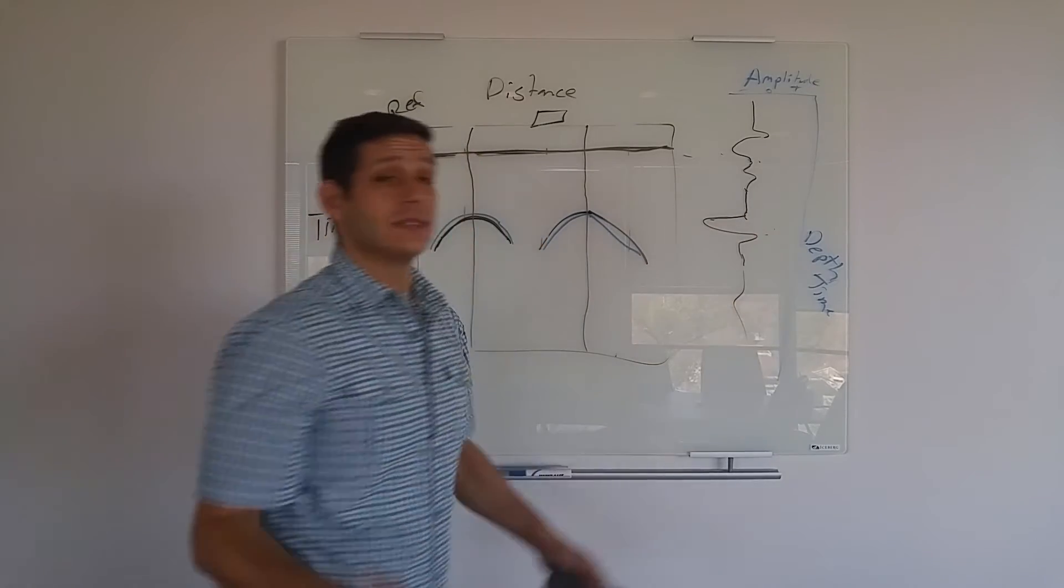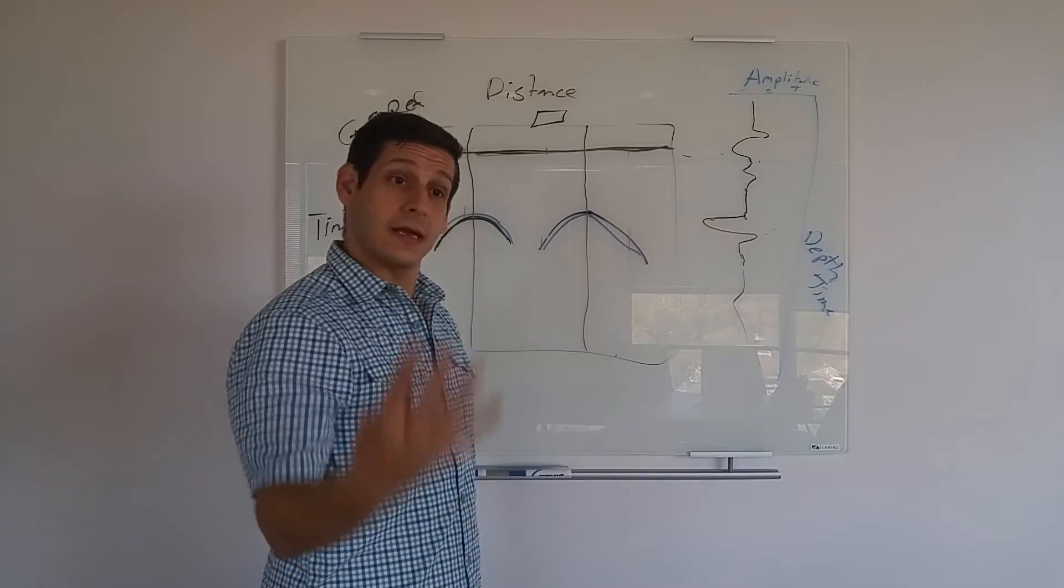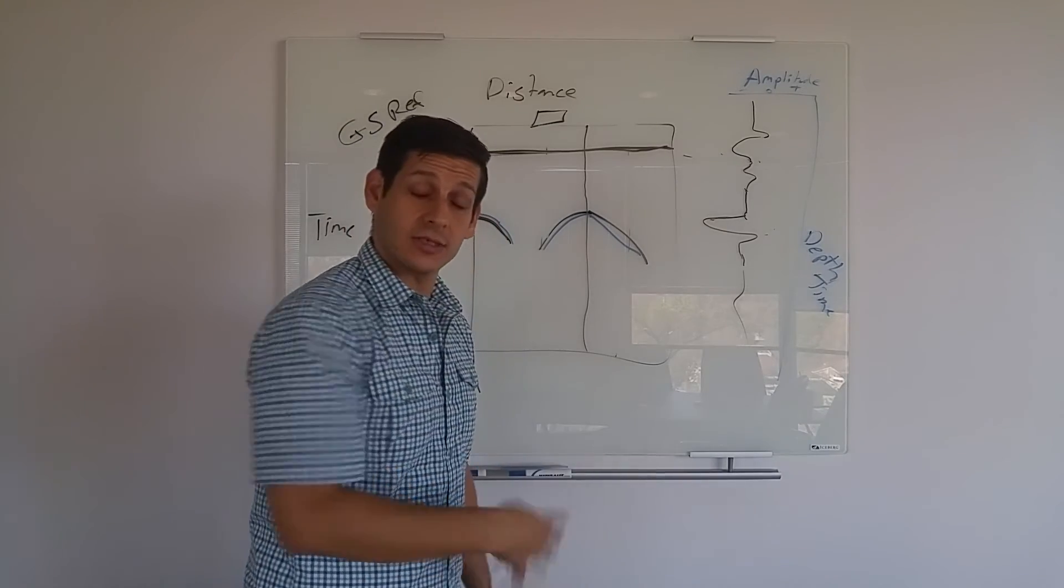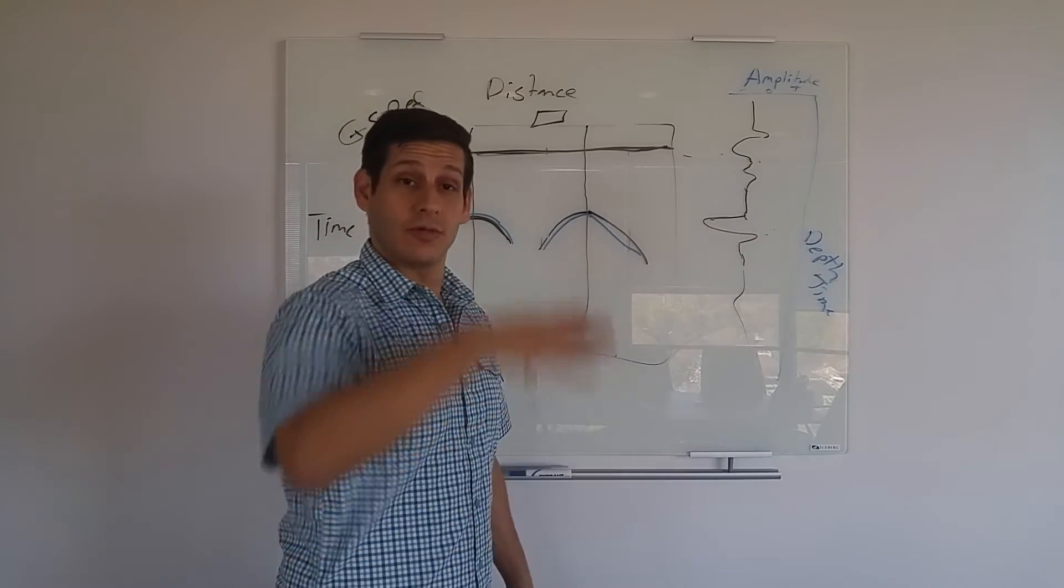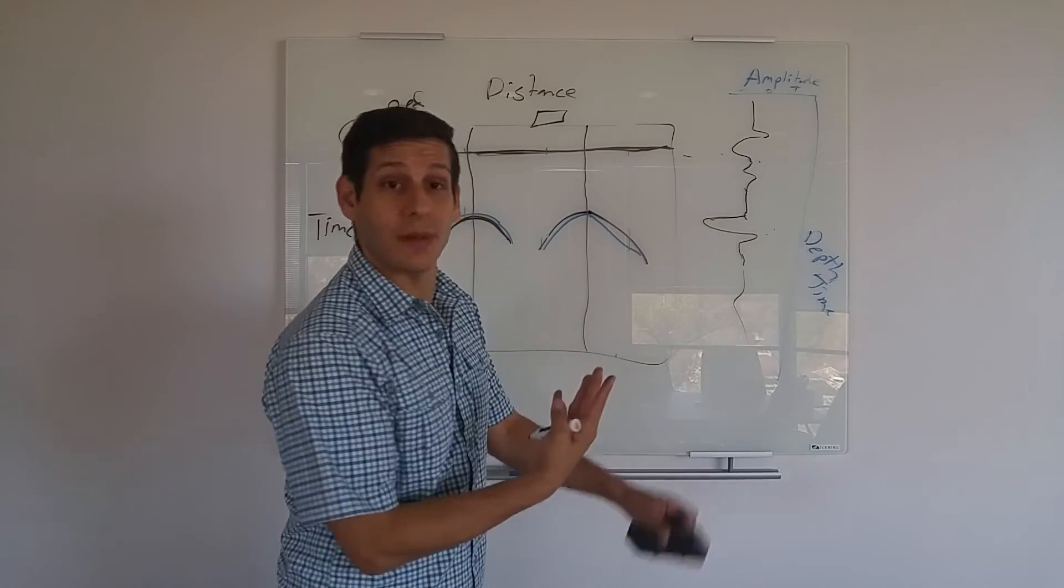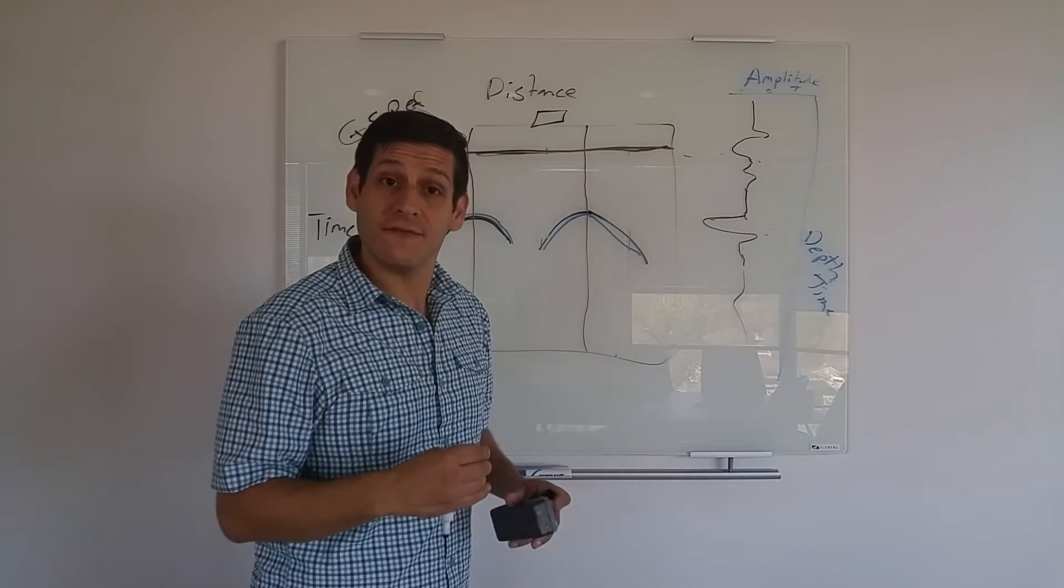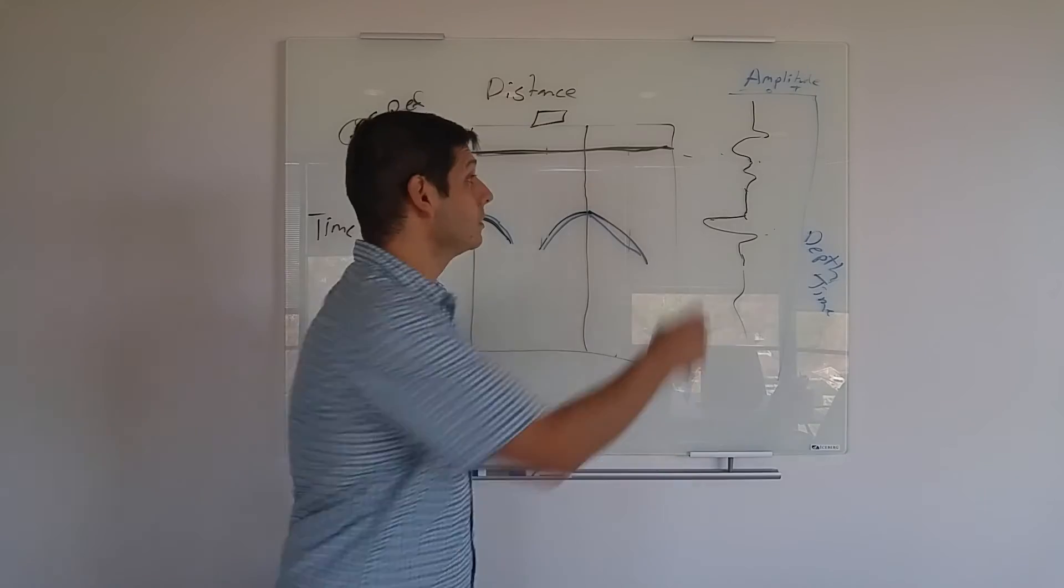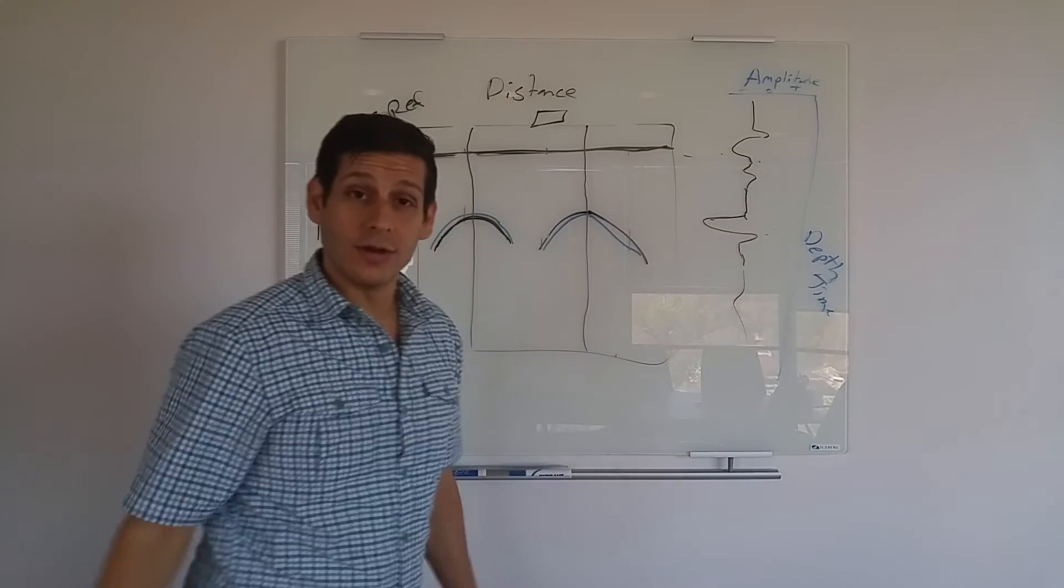The one-dimensional data is very important for that. It can tell you what's going on below the surface. Let's say you're locating graves. Well, did the grave collapse in or is there an air pocket? You can tell the difference using one-dimensional data.